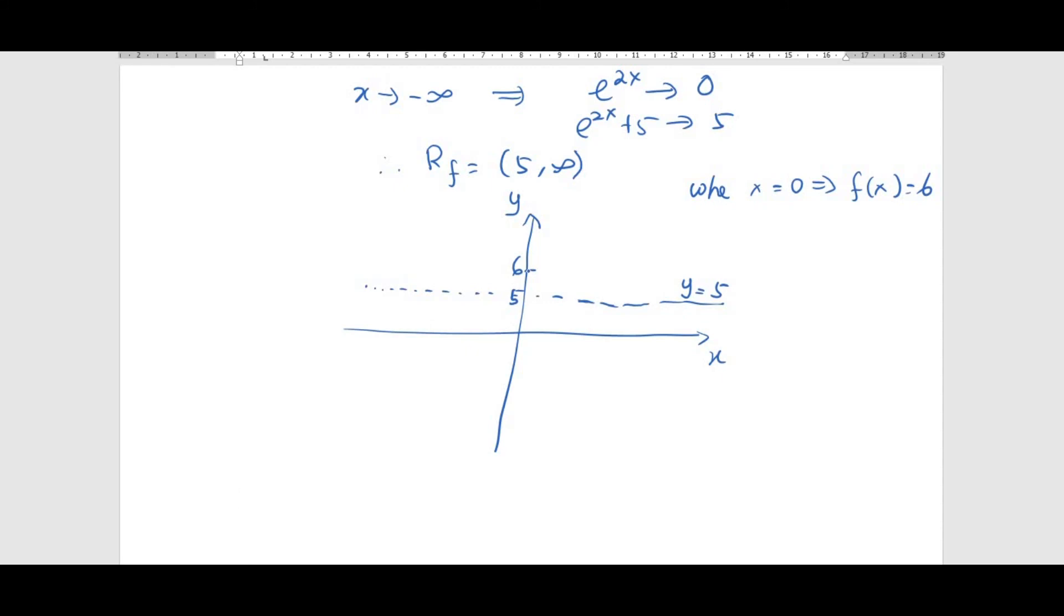So the graph should be going down as x approaches negative infinity, and as x approaches positive infinity, the graph is going up. So this is the graph of f(x) = e^(2x) + 5.